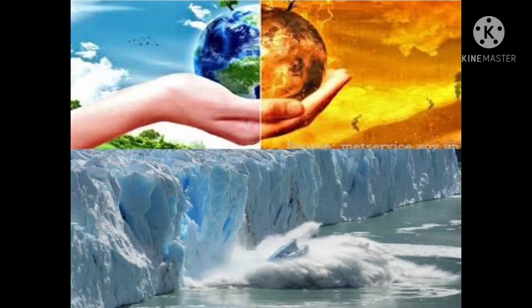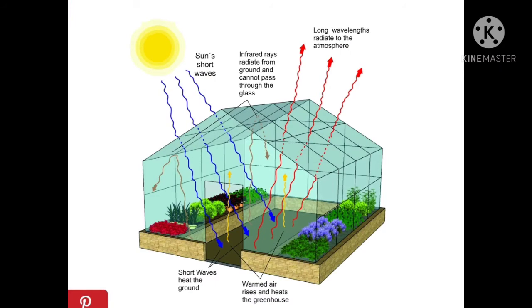First, before that, we'll try to understand what a greenhouse is. A greenhouse is a house made out of glass. Glass has the property of absorbing heat and after absorbing the heat, it does not allow the heat to pass through it, so it maintains the heat within the house itself.